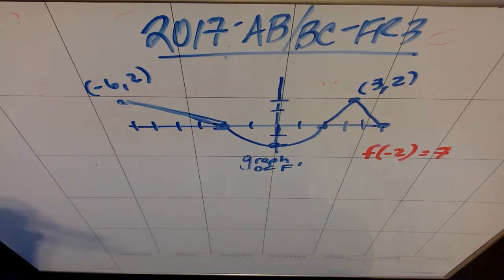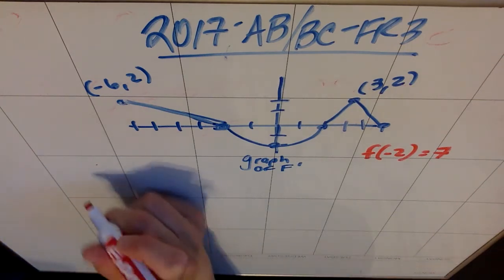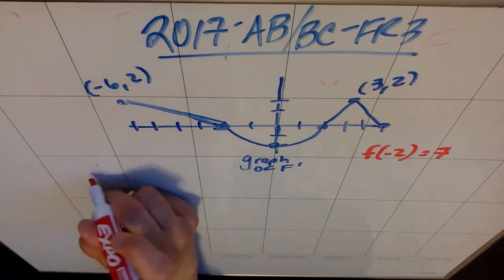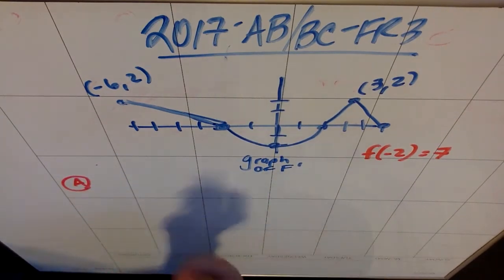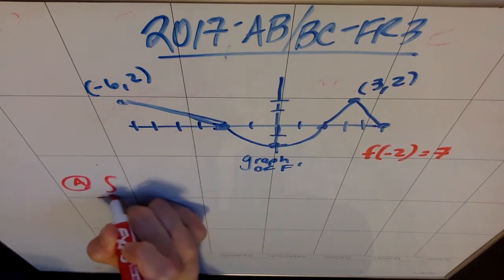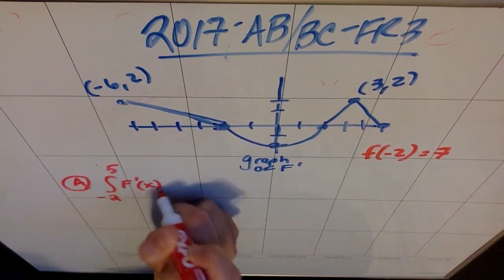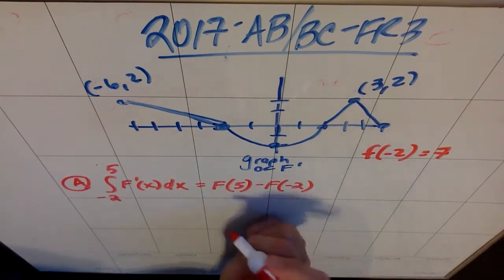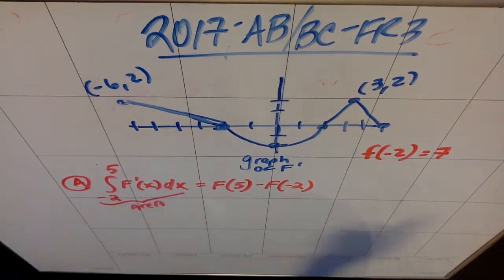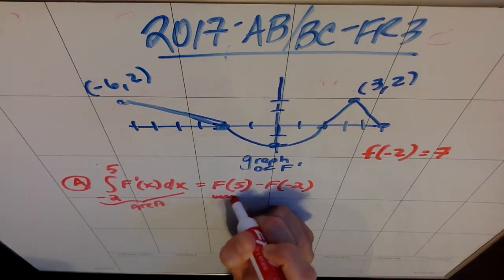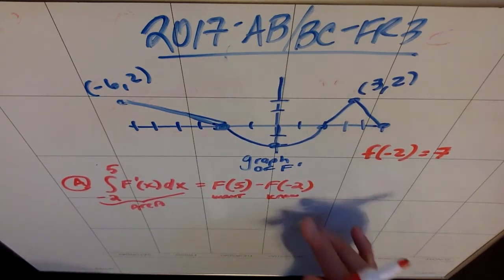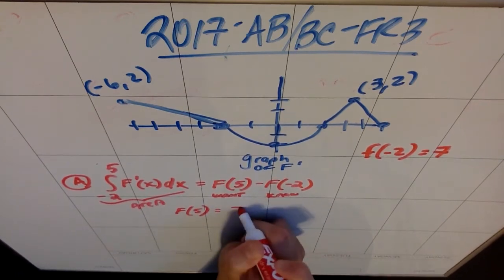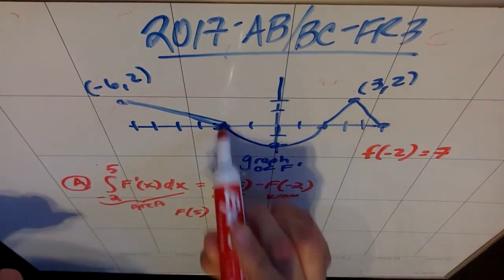Part A: find the values of f of negative six and f of five. This is a first fundamental theorem of calculus question. If we integrate f prime from one bound to another, we find values of f. So if we integrate from negative two to five of f prime of x dx, by the first fundamental theorem of calculus we get f of five minus f of negative two. We know f of negative two and we want f of five, so this is a value we can find using basic geometric formulas.